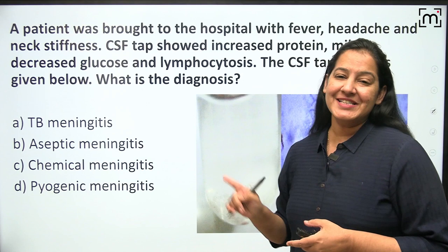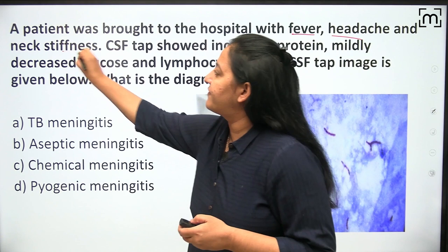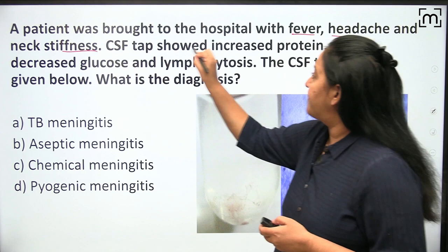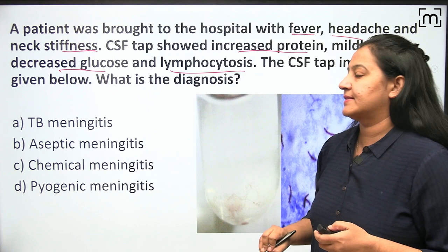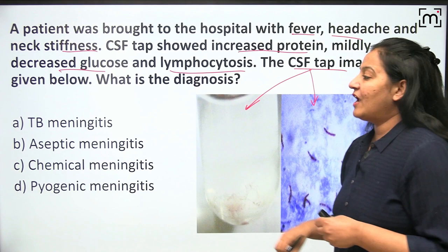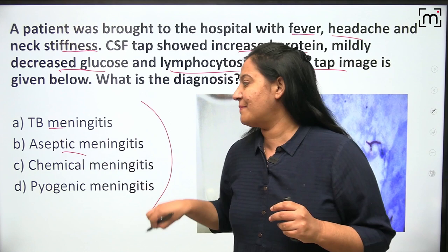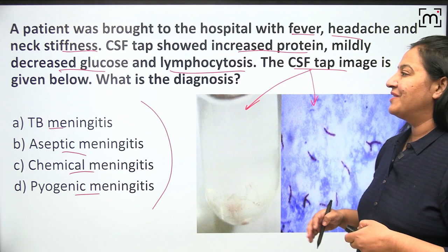This is the first question. A patient is brought to the hospital with fever, headache, and neck stiffness. The CSF tap shows increased protein, decreased glucose, and lymphocytosis. Along with this, the CSF tap image is provided — one gross CSF image and one microscopic picture. All four options are of meningitis, so we have to decide what type: tubercular, aseptic, chemical, or pyogenic.